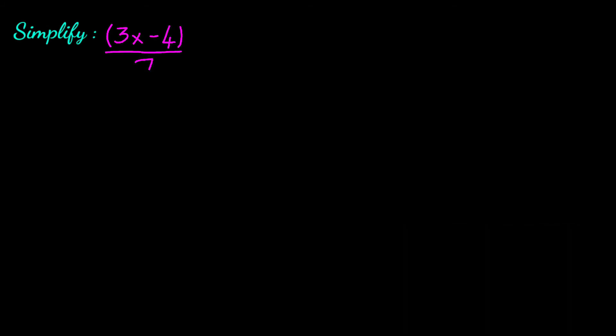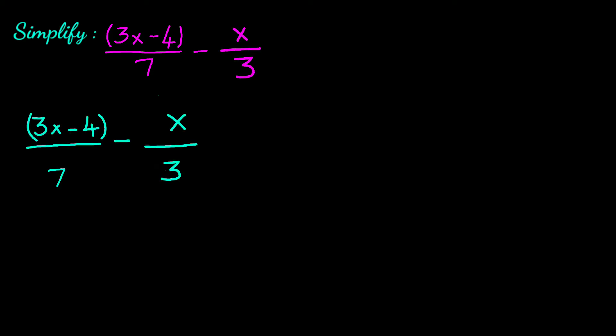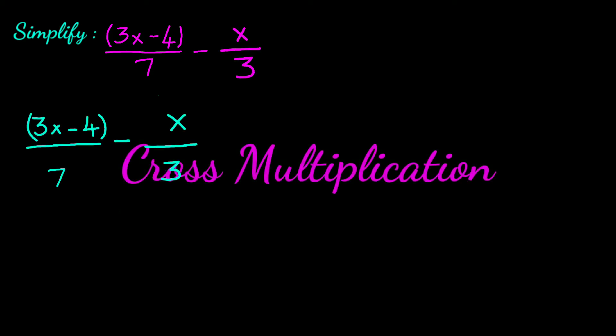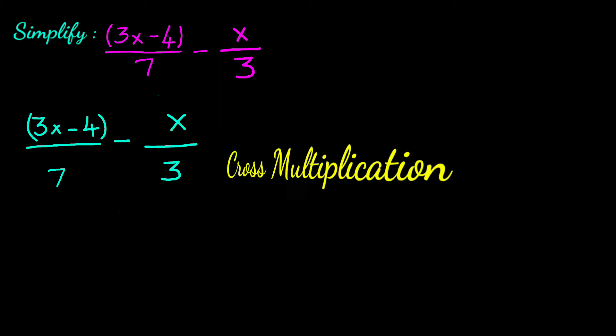Our first example is (3x minus 4) divided by 7, minus x divided by 3. Let's simplify the given fractions by using cross multiplication.